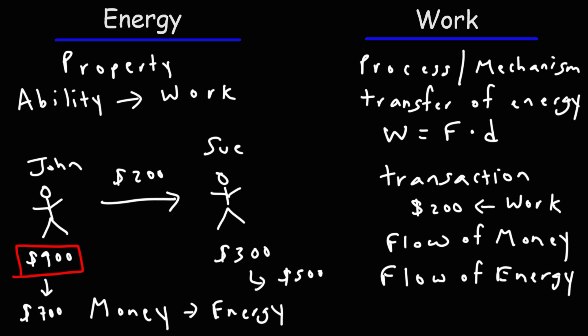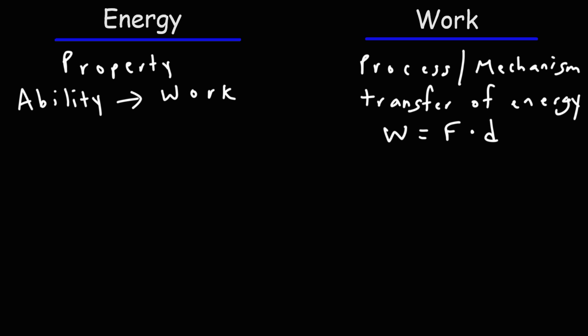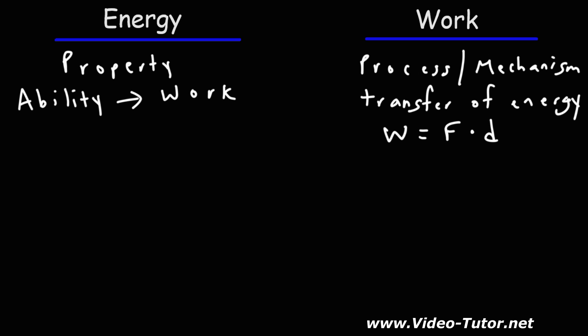In both cases — energy and work — they have the same units: joules. Work is the process or mechanism by which energy can be transferred, specifically through the action of forces. Energy is just how much energy you have in a system, or how much money you have in your bank. Think of work as energy in motion, the flow of energy, the transfer of energy. Anytime energy moves from one object to another, work is being done.